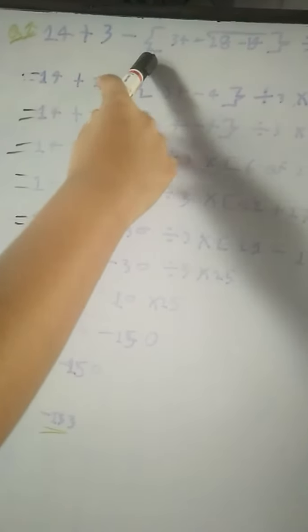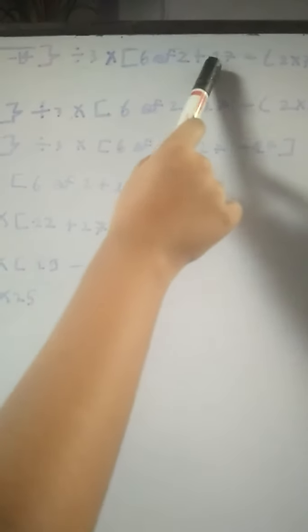Now I have a question here: 14 plus 3 minus curly bracket, 34 minus 18 minus 4 bar, curly bracket close, divide 3, multiply big bracket, 6 of 2 plus 7 minus small bracket 2 multiply by 7, small bracket close, big bracket close.